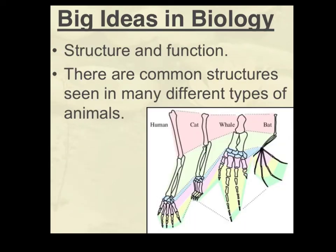The last big idea is the concept of structure and function. There are certain common structures seen in many different types of animals. If we look at the picture here, you can see that the same general bone pattern is followed across different organisms — whether it's a human, a cat, a whale, or a bat, they all have the same general bone pattern, even though the function of each limb is different.